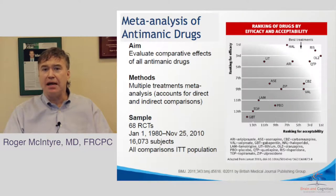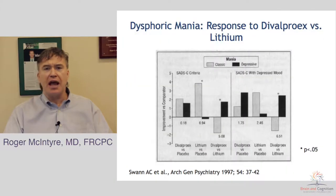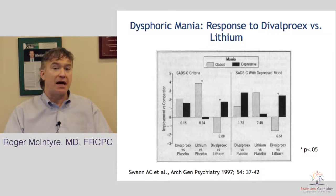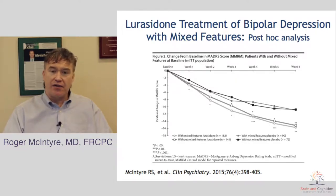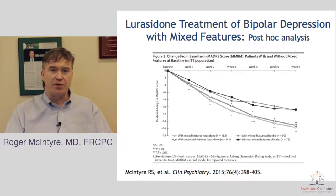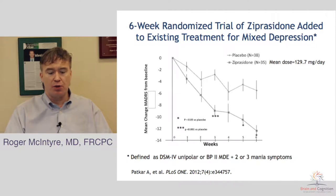Atypical antipsychotics have demonstrated efficacy in mania as well as in mixed states. We know that atypical and conventional antipsychotics can suppress elevation and agitation, and it's no surprise these agents are frequently prescribed for people with mixed features. Among the anticonvulsants — divalproex, carbamazepine, lamotrigine — the agent studied most in mixed features has been divalproex, which not only demonstrates efficacy but in many studies has shown superiority over lithium in treating patients who have mania with mixed features. Data now exist for lurasidone, which has demonstrated efficacy in treating bipolar depression with mixed features, and ziprasidone, which has also demonstrated efficacy in mania with mixed features and more recently in bipolar 2 disorder.